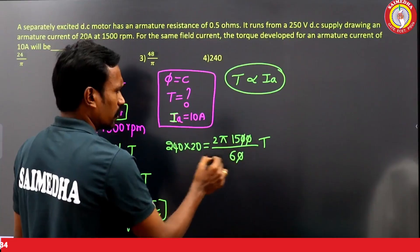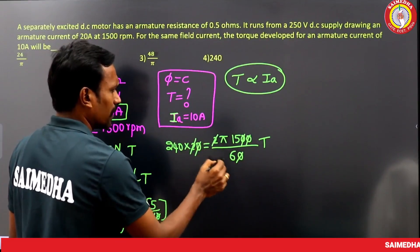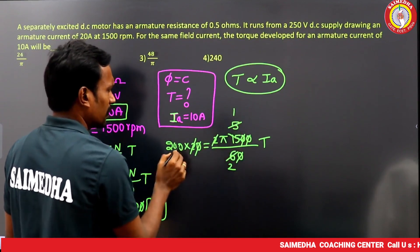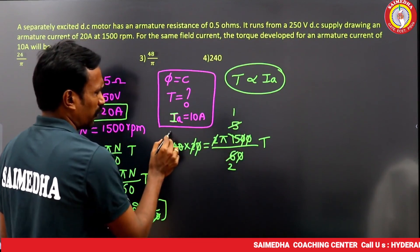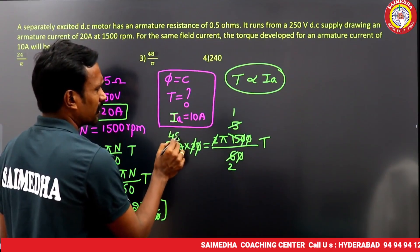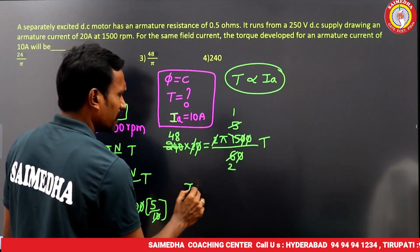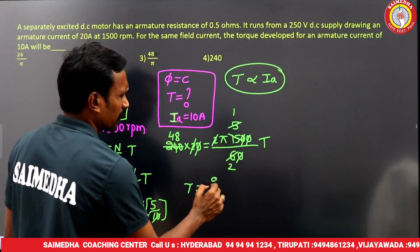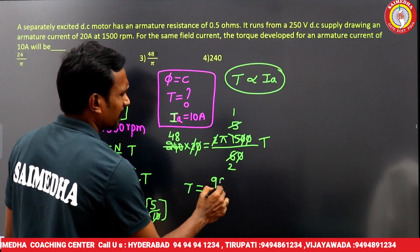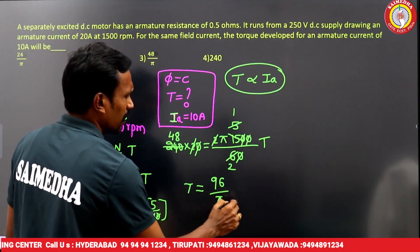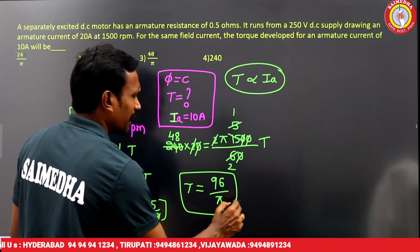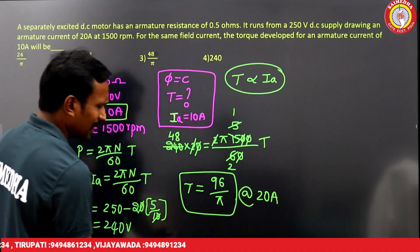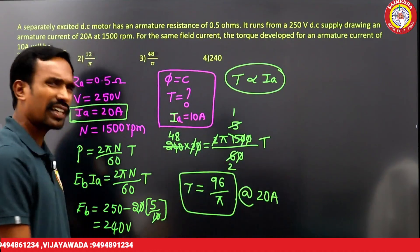Solving the equation, the torque T at 20 amperes comes out to 96/π Newton-meters.